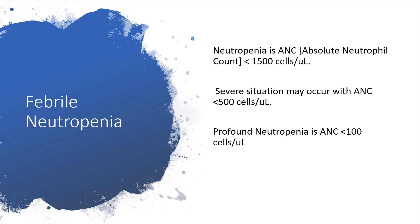Neutropenia is an absolute neutrophil count less than 1,500 cells per microliter. A severe situation may occur with an absolute neutrophil count less than 500 cells per microliter. Neutropenia is said to be profound when the absolute neutrophil count is less than 100 cells per microliter.